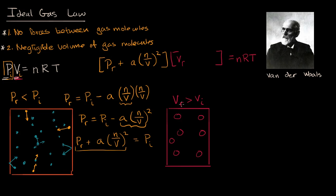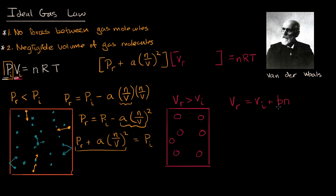Why does it have to be greater? If you don't make the volume greater, these things are going to bump into each other a lot more, and because they're each taking up more space than assumed under the negligible volume assumption, if you held volume constant you would have more pressure. So if you want to hold pressure constant, you have to make the volume bigger. The real volume equals the ideal volume plus space for the actual molecules — a constant B times the number of moles. B is related to the size of the molecules — you can think of it as a 'bigness factor.' Rearranging: the real volume minus B·n equals the ideal volume.